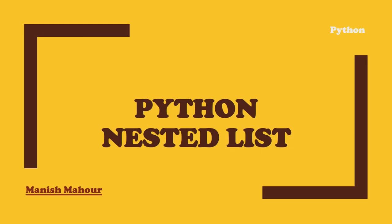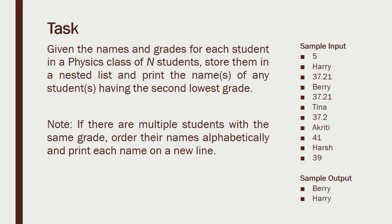Welcome everyone. In this video we will do an example for nested lists. Nested lists are those lists which have lists as their elements — lists inside a list. We will also see how we can remove duplicate elements from a list. Our task: given the names and grades for each student in a physics class of N students, store them in a nested list and print the name of any students having the second lowest grade. Note: if there are multiple students with the same grade, order their names alphabetically.